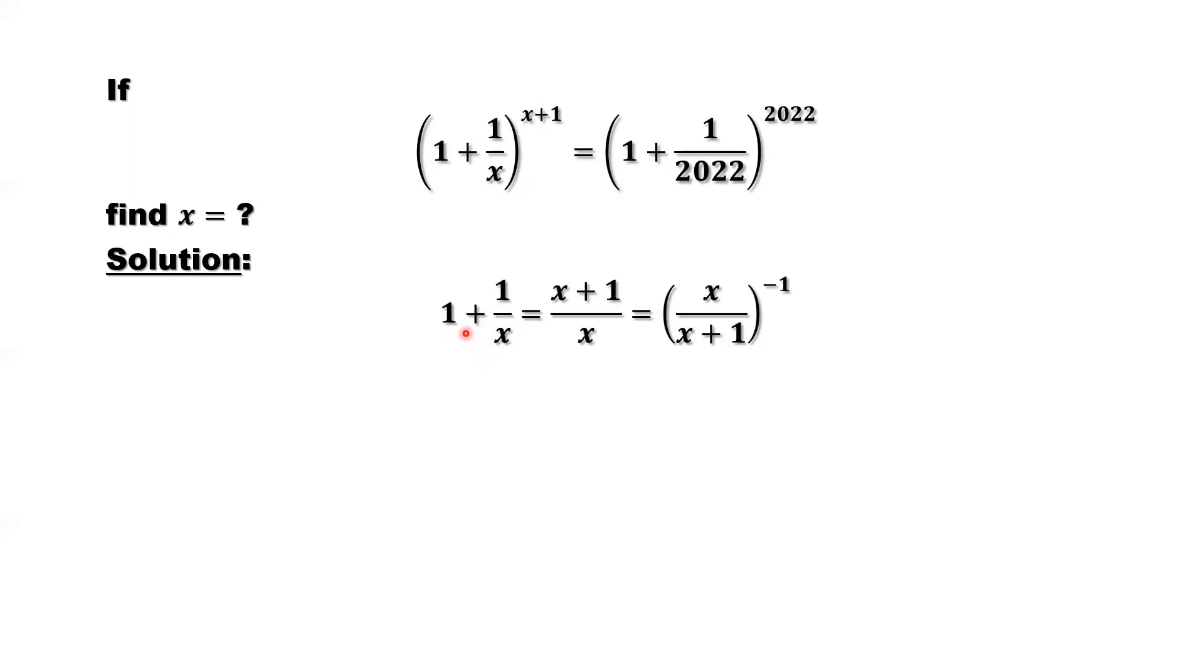So here simplify the inside part, just the inside part. Consider the common denominator. 1 is x over x. So the numerator is x plus 1. It's ready in terms of x plus 1. But denominator is not. So denominator, we can flip numerator and denominator. Put a negative power here. When we swap numerator and denominator, we have to put negative sign, negative 1 as the power.